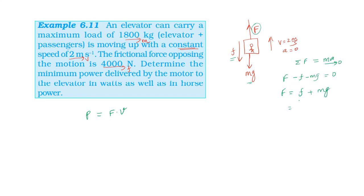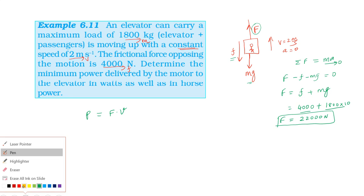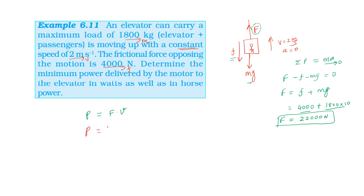The friction is 4000 N and mass is 1800 kg, so mg equals 1800 × 10 = 18000 N. Therefore, total force equals 18000 + 4000 = 22000 N. The force with which the rope of the elevator pulls is 22000 N. So power equals 22000 × 2 = 44000 watts.